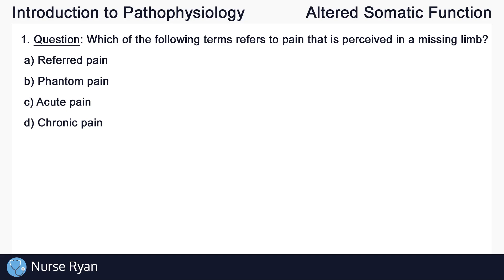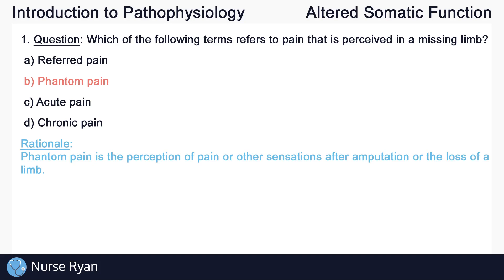Starting off with question number one: which of the following terms refers to pain that is perceived in a missing limb? I'll leave a bit of a break where you can pause the video and think about the answer. The answer here is B, phantom pain. Phantom pain is the perception of pain or other sensations like itching or tingling after amputation or the loss of a limb.